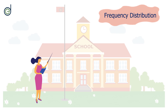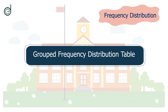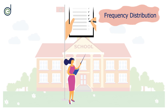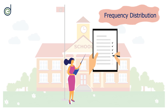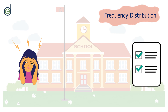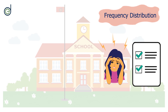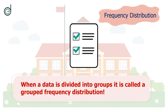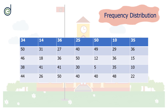Let's now talk about the grouped frequency distribution table. At the end of the term, Miss Elsa needs to analyze the examination scores of her students. She realized that the marks were cumbersome and there would be a lot of number occurrences, so she decided to group the data. When data is divided into groups, it is called a grouped frequency distribution. Now look at the scores of the students in Miss Elsa's class.